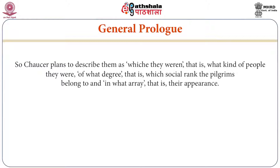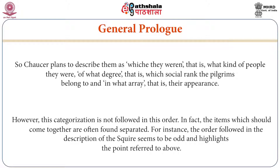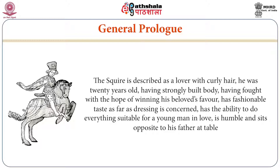Chaucer plans to describe the pilgrims as what kind of people they are, what degree or social rank they belong to, and what array or appearance they present. However, this categorization is not followed in strict order. The items which should come together are often found separated. For instance, the description of the Squire seems odd — he is described as a lover with curly hair, twenty years old, with a strongly built body, having fought with the hope of winning his beloved's favor.